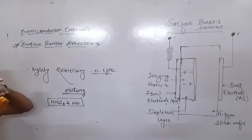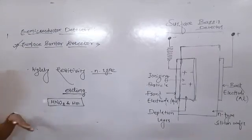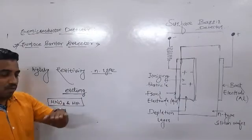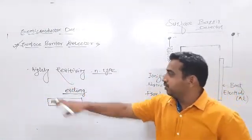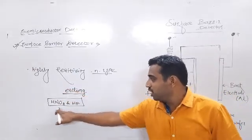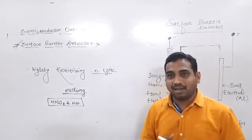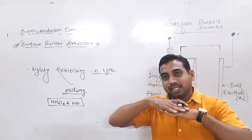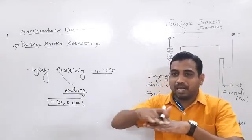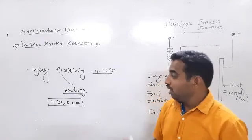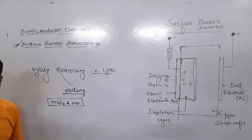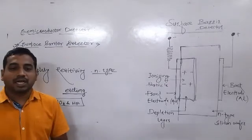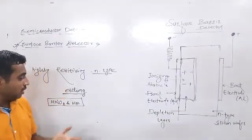The surface layer works like an oxidation layer, meaning the N-type layer on the surface works like an oxide. After this chemical effect and exposure in air, this layer works like a PN junction, allowing the detector surface to function like a PN junction.